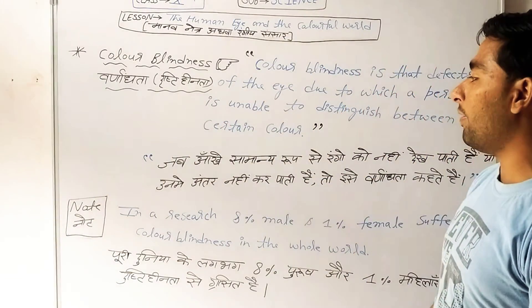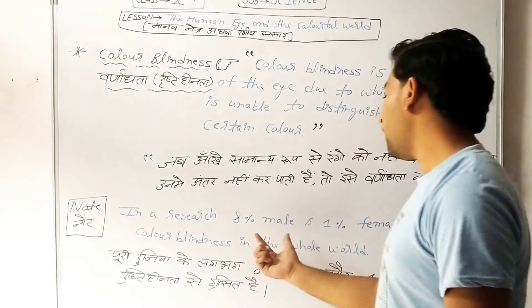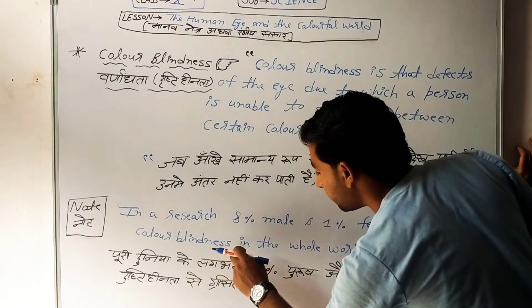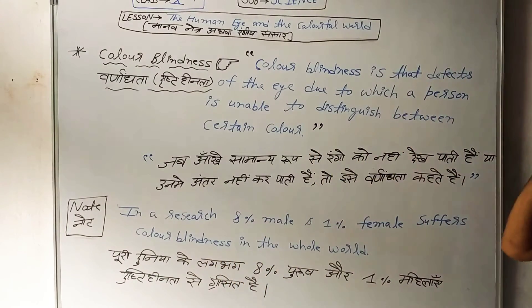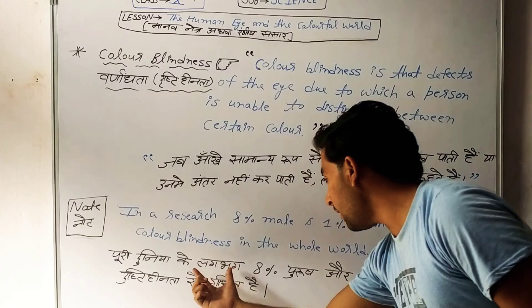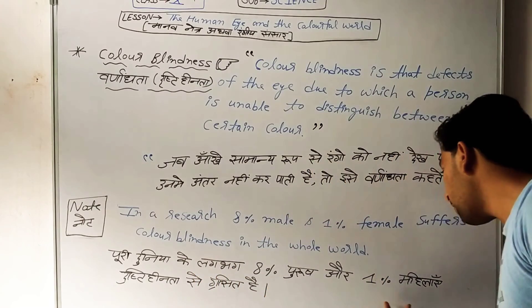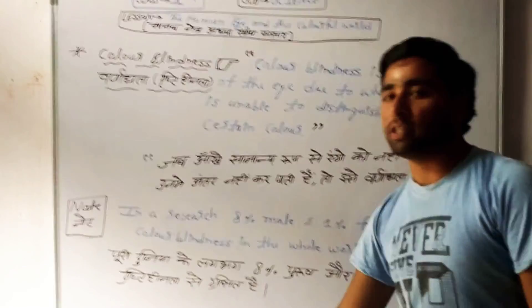We note that 8% of males and 1% of females suffer from color blindness worldwide. In this course we find that 8% male and 1% female are affected.